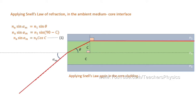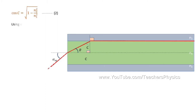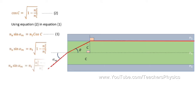Applying Snell's law again at the core-cladding interface: N1·sin(C) = N2·sin(90). Rearranging, sin(C) = N2/N1, so cos(C) = sqrt(1 − sin²C) = sqrt(1 − N2²/N1²) — equation 2. Using equation 2 in equation 1: Na·sin(alpha_m) = N1·sqrt(1 − N2²/N1²). Rearranging: sin(alpha_m) = sqrt(N1² − N2²) / Na, where Na is the refractive index of the ambient medium and N1 and N2 are the refractive indices of core and cladding respectively.